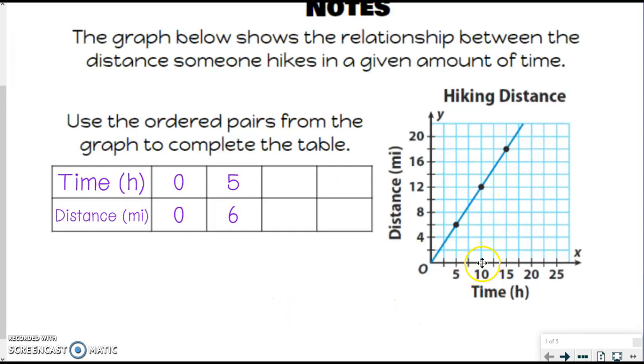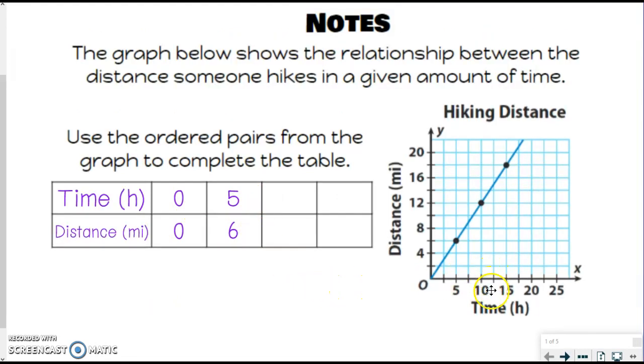Let me do the next one. Keep in mind, this should be proportional, so we should be able to see a connection as we move across. We've got 10 hours for the next point, and when I look, it's at 12 miles. It makes sense because if I take 6 times 2, it gives me 12. 5 times 2 also gives me 10. So we're doing the same thing to both numbers.